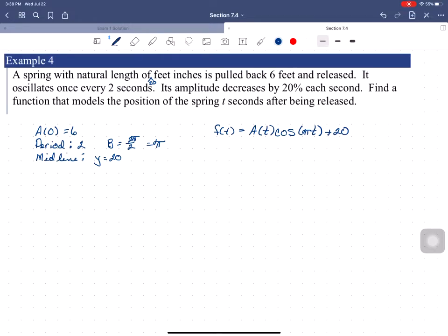Now, just a minute ago, I did an example where we increased by so much each period or each partial period. It was elk population increased by 4% per year. This time what we have is an amplitude decreasing by 20% each second. Okay. So, when time is zero, my amplitude starts at 6, right?